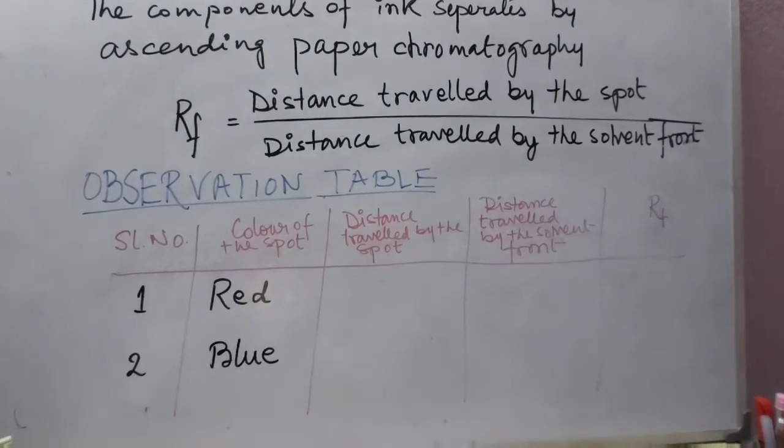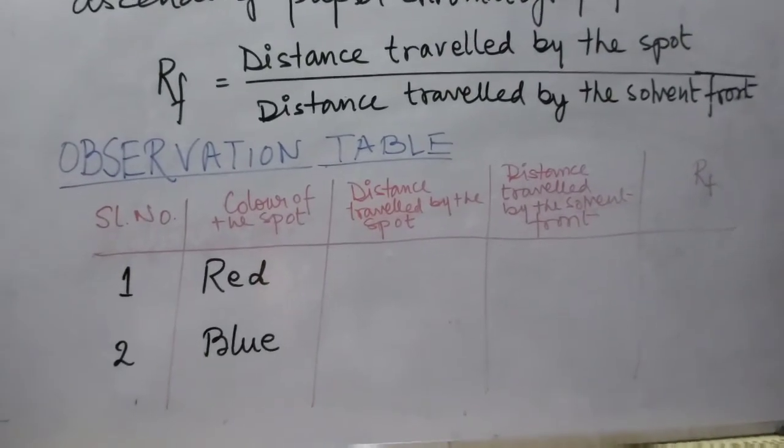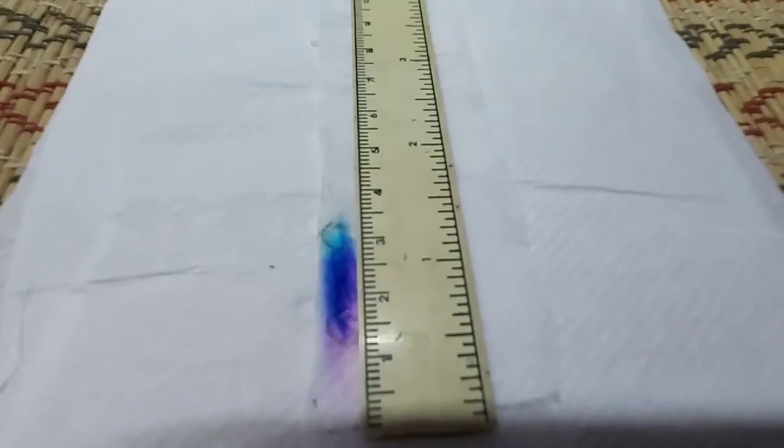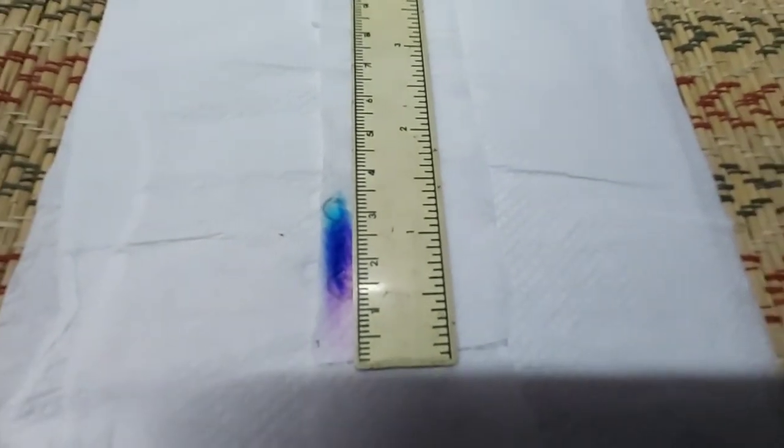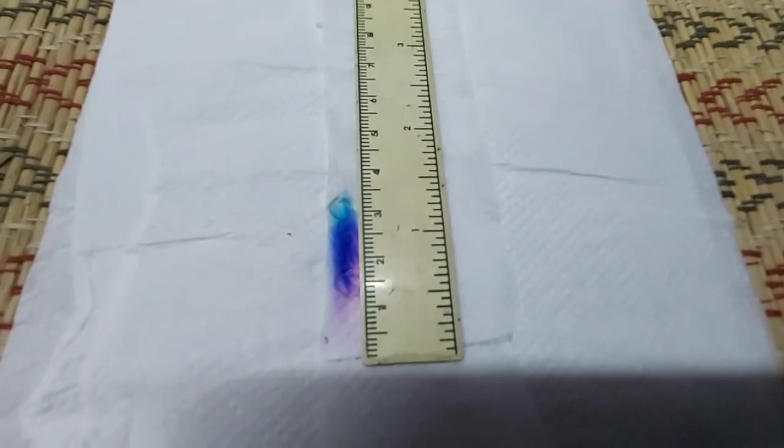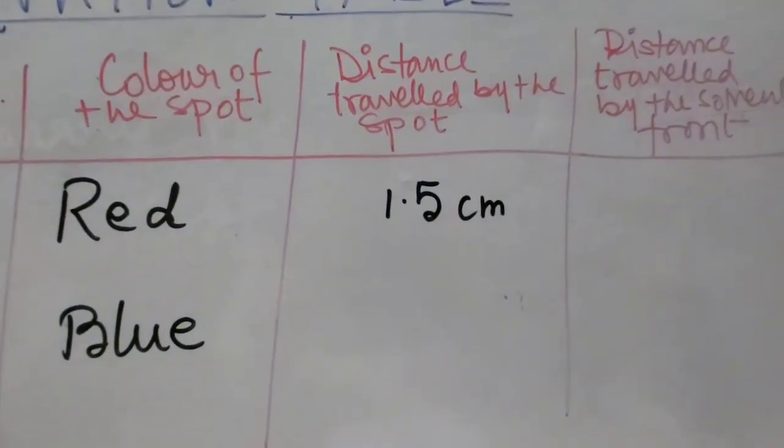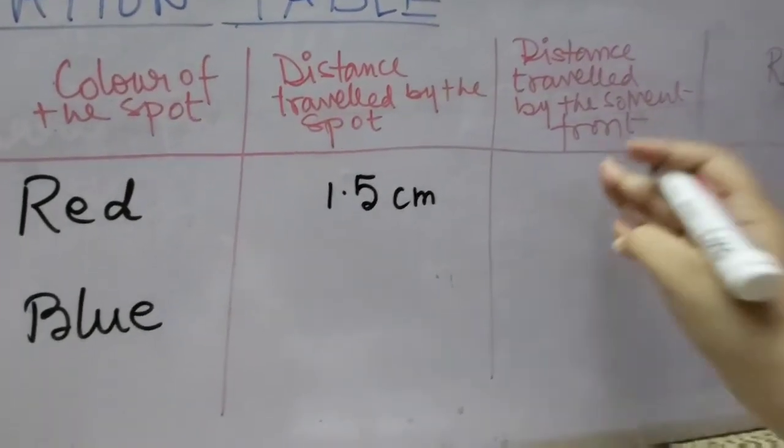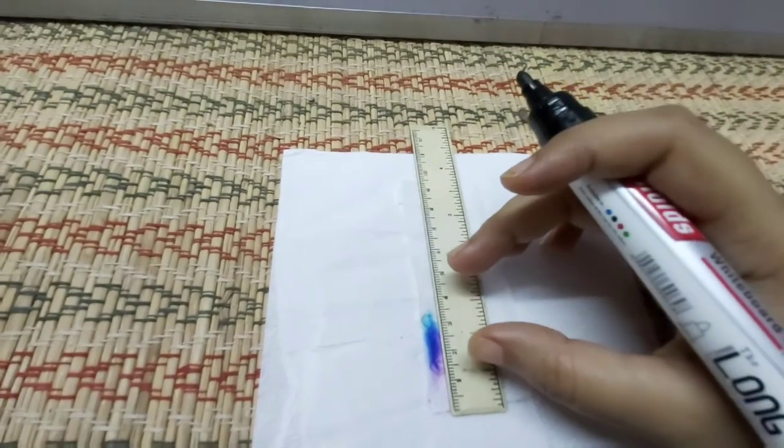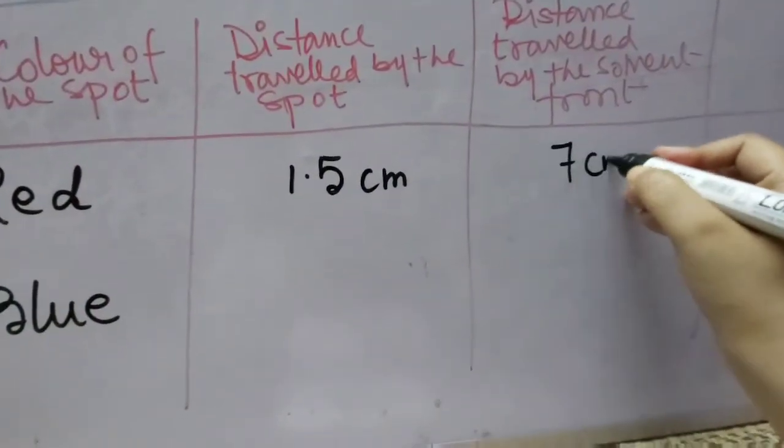First, number one: the color spot which we are getting on the paper is red, and the distance traveled by the spot—here we can write its distance is 1.5 from the origin. So from the baseline, the red spot extends to 1.5 centimeters. I'm writing here 1.5 centimeters distance traveled by the red color. And the second one is the distance traveled by the solvent front. Here the distance we are taking for the solvent front is up to 7 centimeters for both cases.